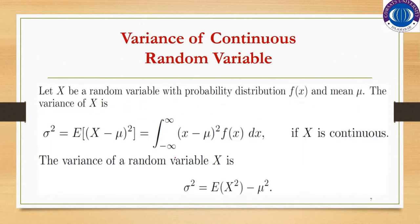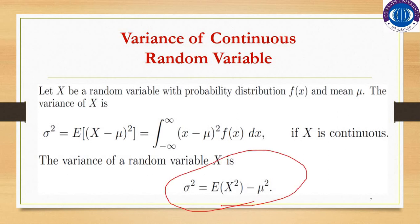Variance of continuous random variable. As we already learned in the discrete case, sigma squared is the variance, equal to the expected value of x minus mu, whole squared. When you expand this, you integrate x minus mu whole squared times f of x dx over the whole limit. On simplifying, using the a minus b whole squared formula, you get the formula: sigma squared equals expected value of x squared minus mu squared.